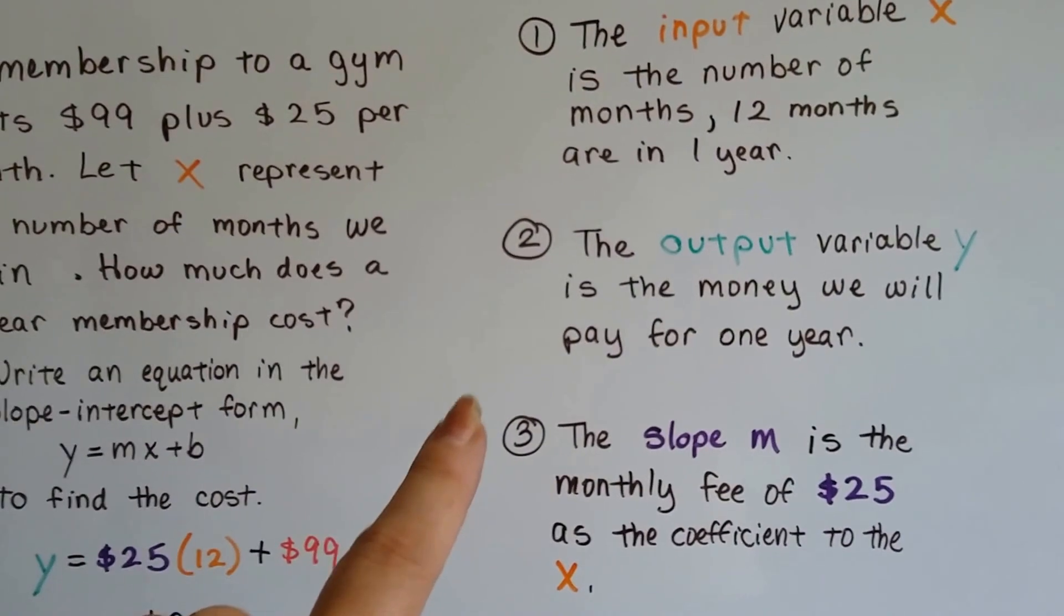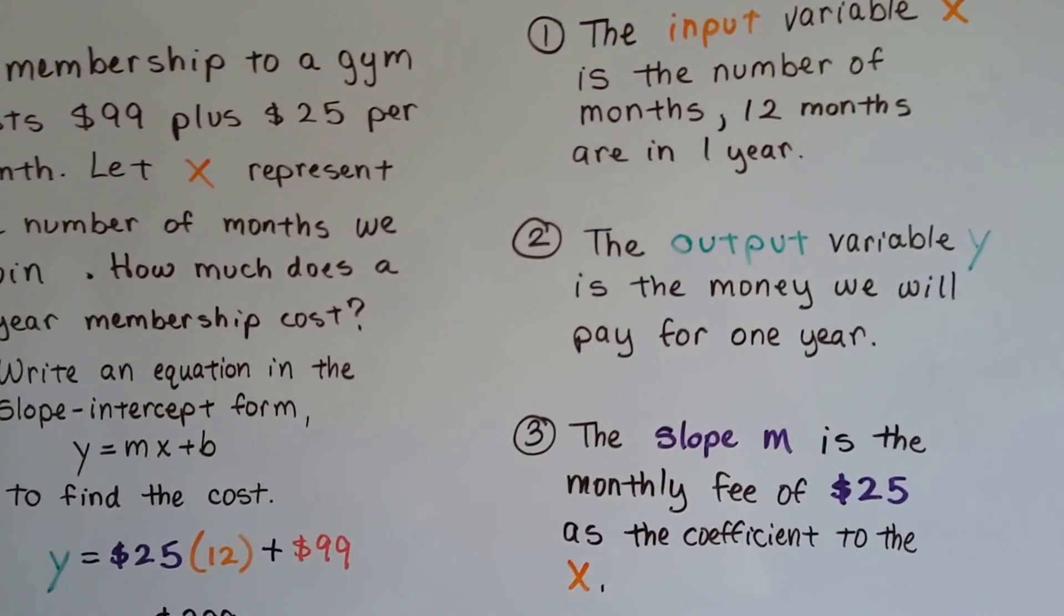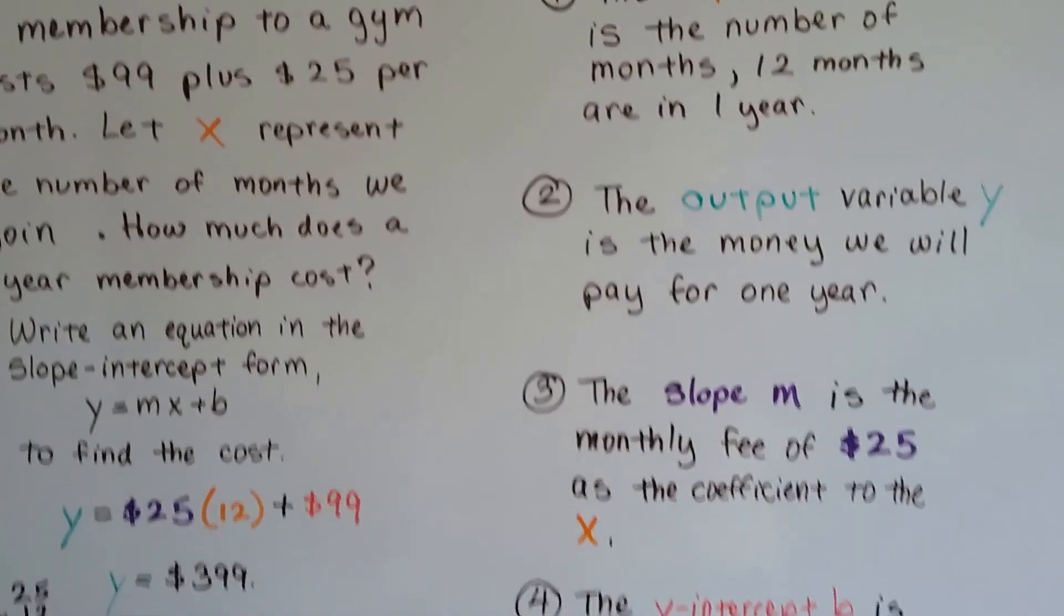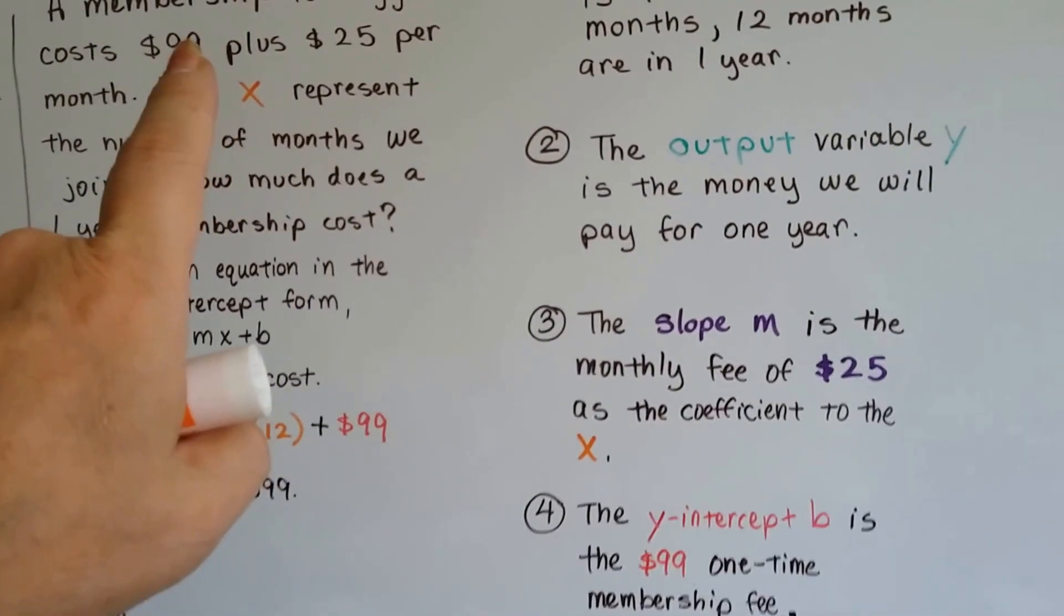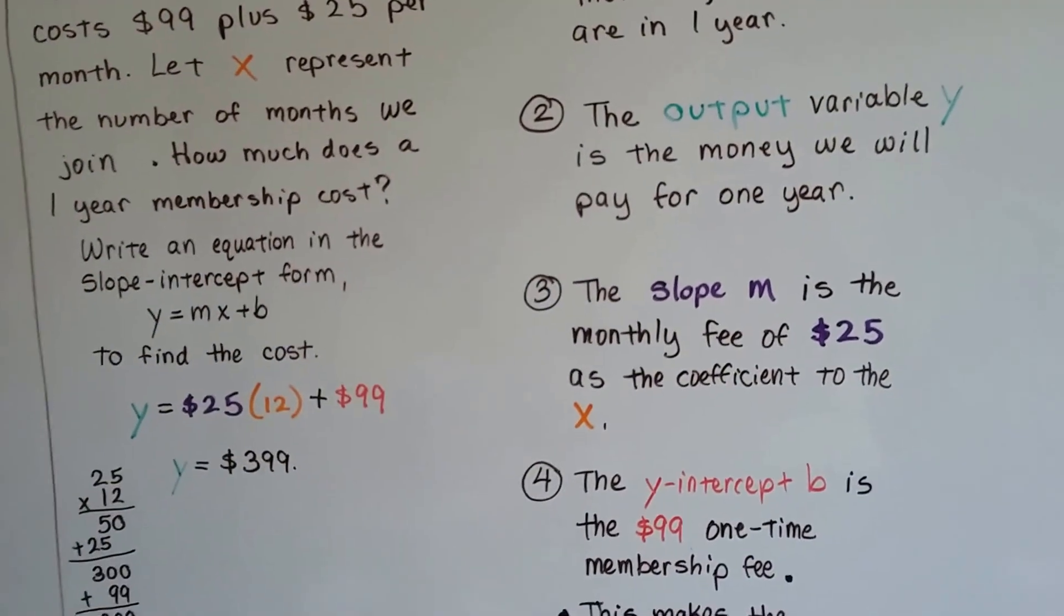The slope m is the monthly fee of $25, and it's the coefficient to the x. The y-intercept b is the $99 one-time membership fee.